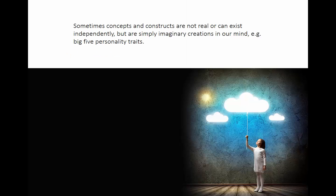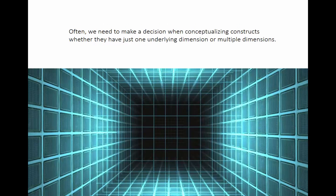Sometimes these concepts don't exist as physical properties you can touch. One example is the Big Five personality traits — important in both psychology and sociology — which capture how open you are as a person, along with other dimensions. These traits don't physically exist; there's no part of your brain that determines how nice a person you are. But it's still useful to have these concepts and constructs for analysis, even though they don't physically exist.